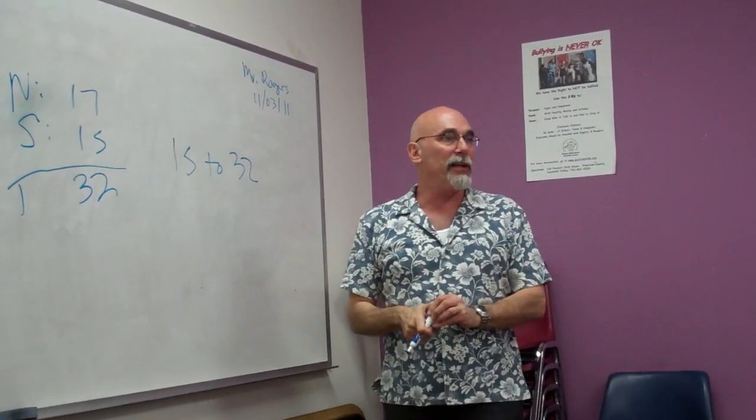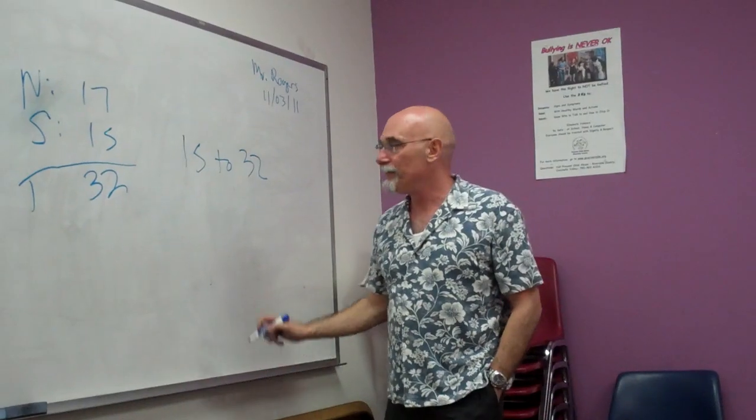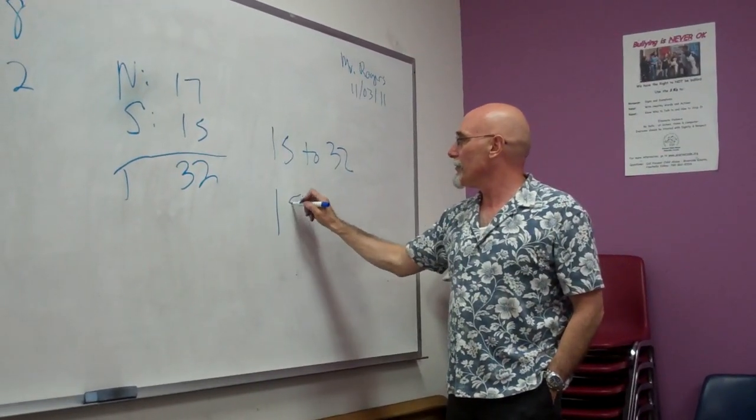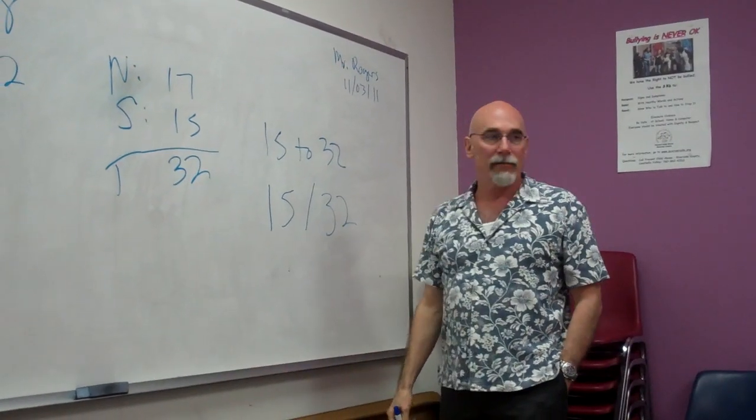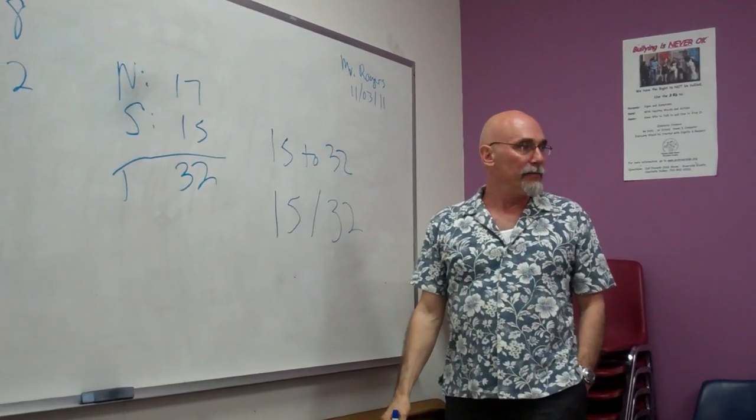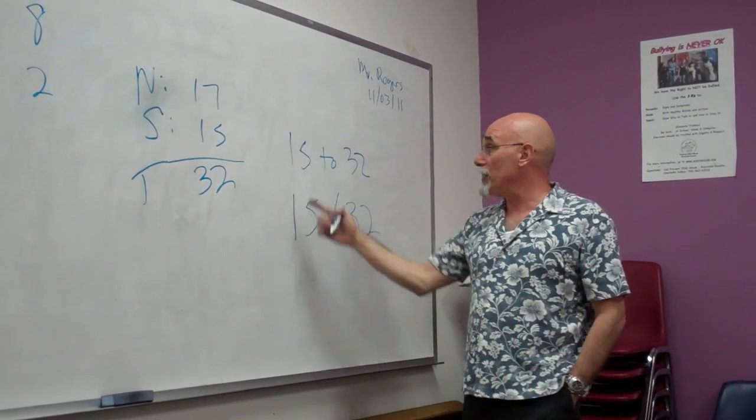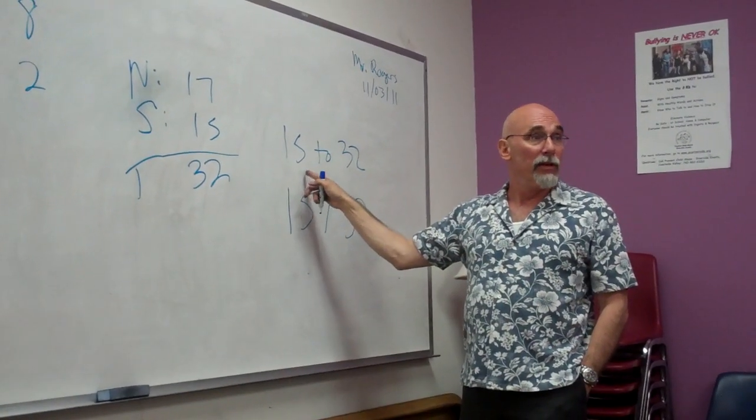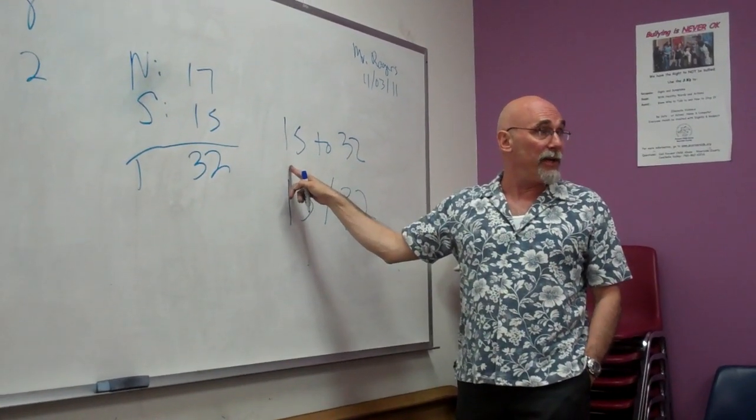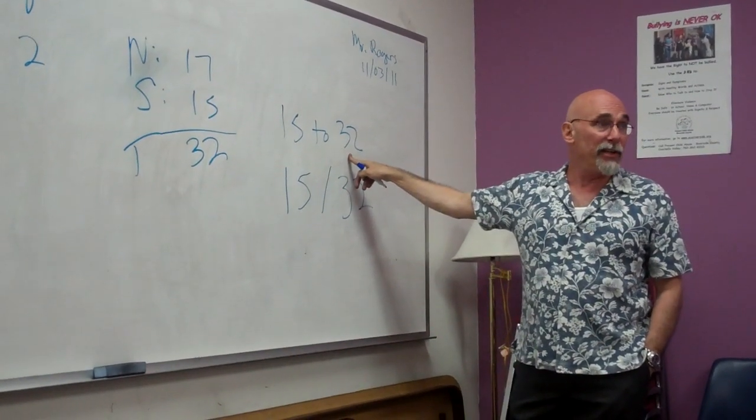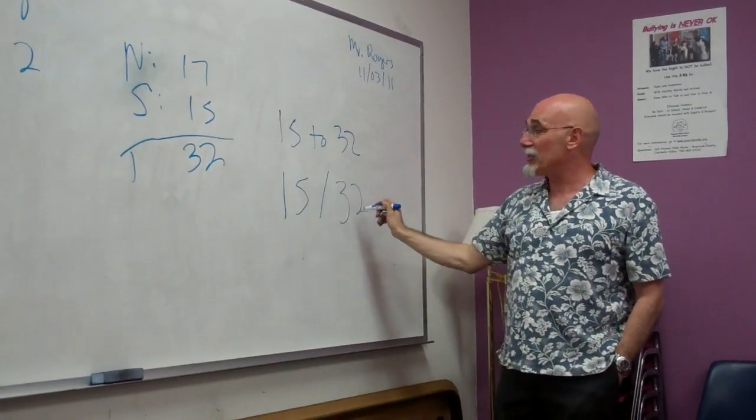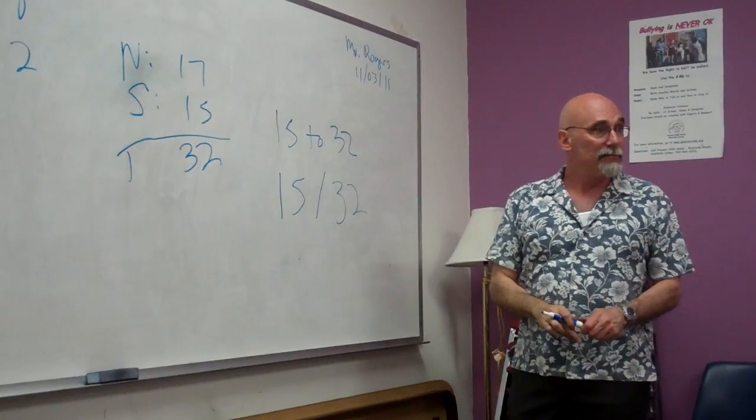So, how are you going to put it in your grid, Lisa? 15 slash 32. Well, I tried to even reduce it. Can you reduce this? No. The only numbers that go into 15 are 3 and 5. Do either of those go evenly into 32? No. So, you can't reduce it. So, it's 15 slash 32. Make sense? Yeah.